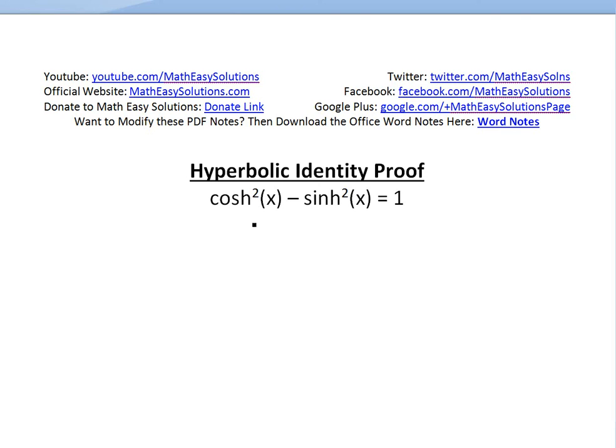Hi, it's time for another Math Easy Solution to discuss another hyperbolic functions identity proof and look at the proof for this identity: hyperbolic cosine squared of x minus hyperbolic sine squared of x equals 1.